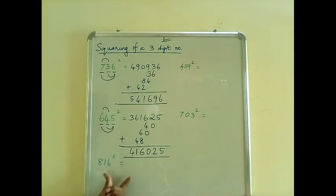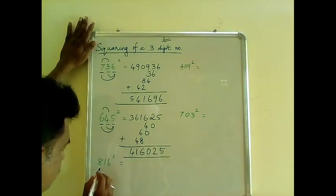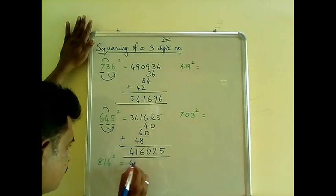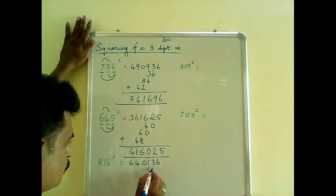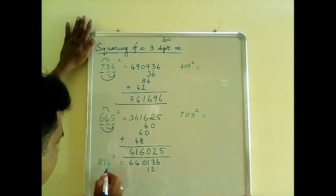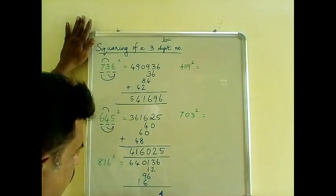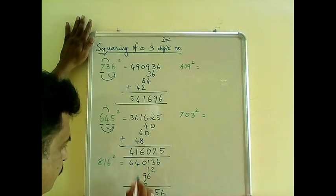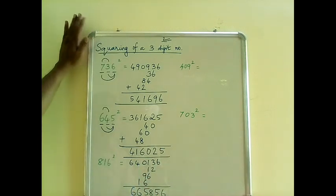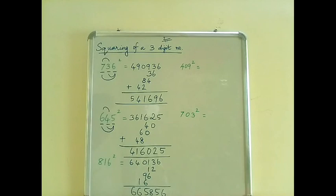Just by seeing these numbers you can get the answer immediately. Consider 816 squared: 64, 01, 36. And 2bc is 12, 2ac is 96, and 2ab is 16. Adding: 6, 5, 8, 5, 6, 6. So the square of 816 is nothing but 665,856.